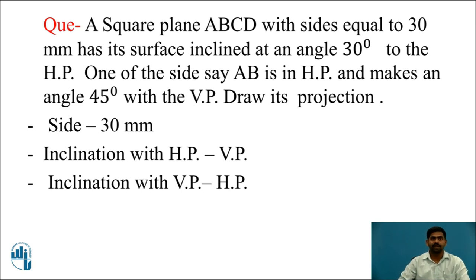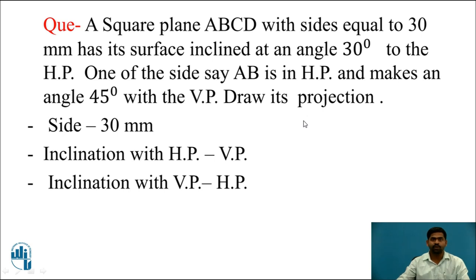For understanding the Projection of a Square Plane, consider the problem. A Square Plane ABCD with sides equal to 30mm has its surface inclined at an angle of 30 degrees to the HP. One of the sides, say AB, is in the HP and makes an angle of 45 degrees with the VP. Draw its Projection.